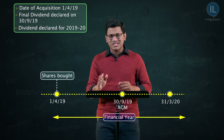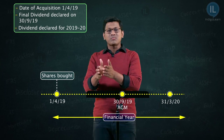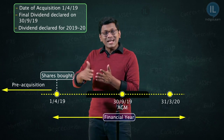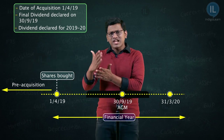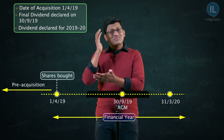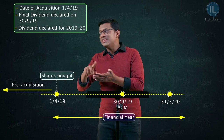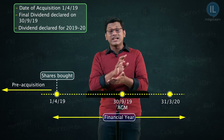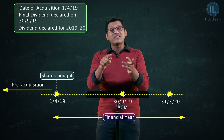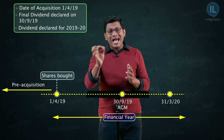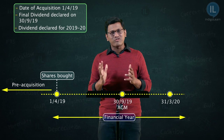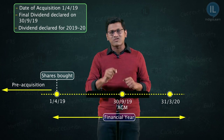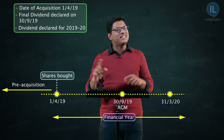The final dividend paid on 30th September 2019 is for the 2018-19 year — the previous financial year. With respect to our date of acquisition of 1st April 2019, that prior period is already over. We were not shareholders in that period, yet we received the dividend. So, it is clearly a pre-acquisition dividend for us.